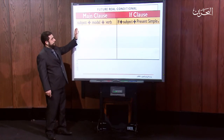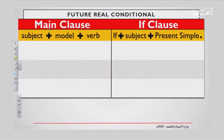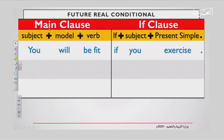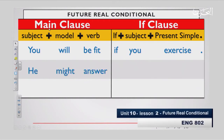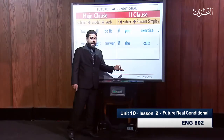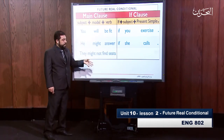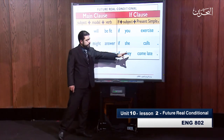Now let's flip the clauses — start with the main clause and end with the if-clause. For example: 'You will be fit if you exercise.' Notice the 'if' is now in lower case because it is in the middle of a sentence. Also, the verb after the modal stays in the base form — for example, 'be,' not 'is' or 'are.' In 'He might answer if she calls,' note 'calls' is present simple — she calls, you add the S. 'They might not find seats if they come late' — 'come late' is also present simple.